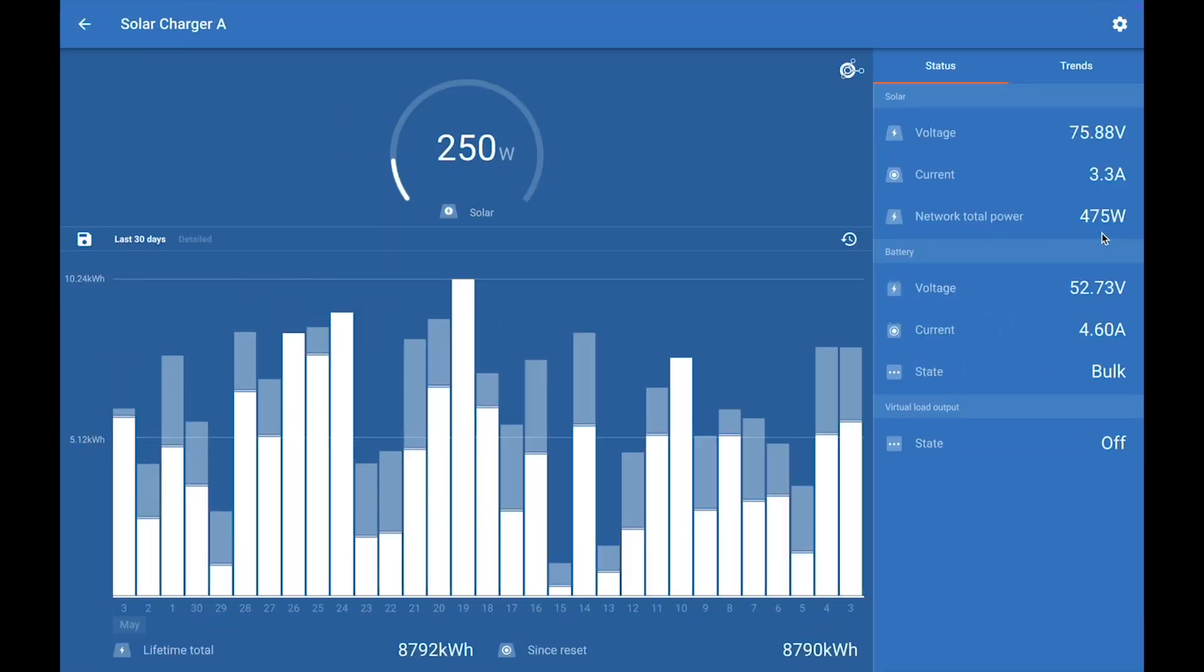Okay, so off of the first array and the first charger, we're getting about 250 watts. If we come look at the overall, that's both of the arrays, we're getting 478, just a little less than 500 watts of power, even in the rainstorm.